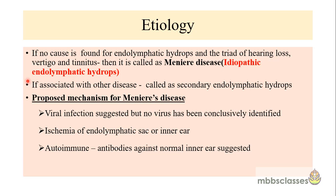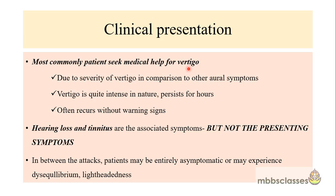Meniere's disease is idiopathic endolymphatic hydrops — when no cause is found for the endolymphatic hydrops and no cause is found for the symptom complex, only then it is Meniere's disease. Different mechanisms are proposed: it is believed it could be due to viral infection, but till date no virus has been conclusively identified. A second mechanism suggests it can happen due to ischemia of the endolymphatic sac or inner ear. A third mechanism proposes it could be the result of autoimmune mechanisms, as antibodies against the inner ear have been suggested and found.